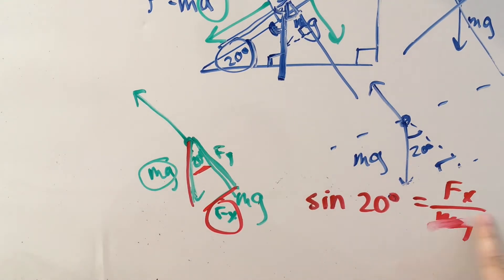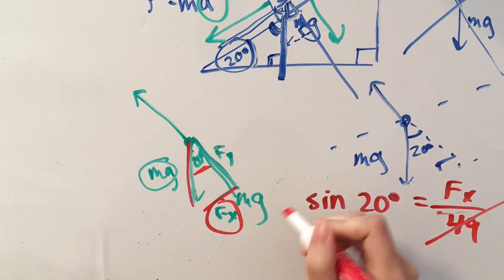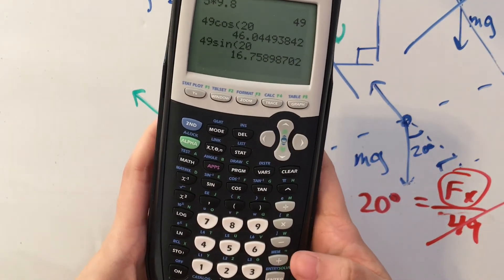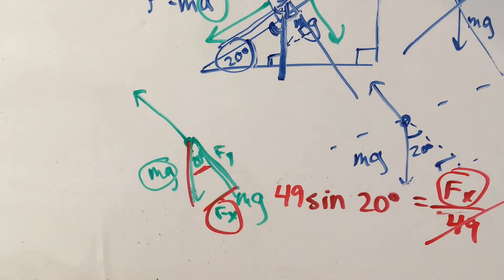So sine of 20 degrees equals opposite over hypotenuse, which is also 49. So when we multiply 49 on both sides, we get that the x component is equal to 49 times the sine of 20 degrees.